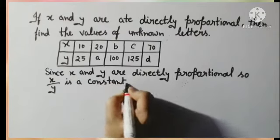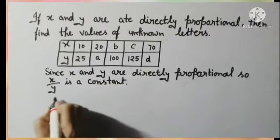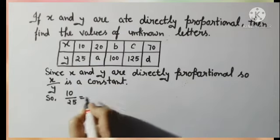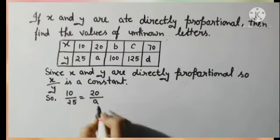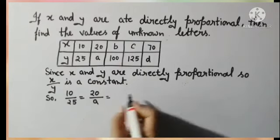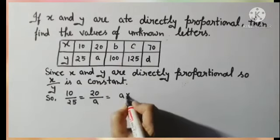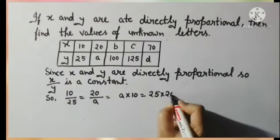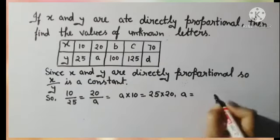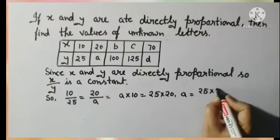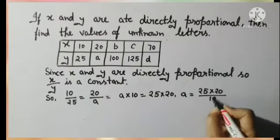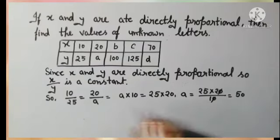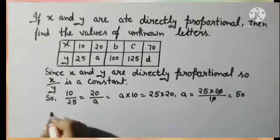We take a known ratio and the unknown ratio with the alphabet. That is, 10/25 = 20/a. Cross-multiplying: a×10 = 25×20. Transposing 10 to the right side gives a = (25×20)/10 = 50. So the first value: a = 50.